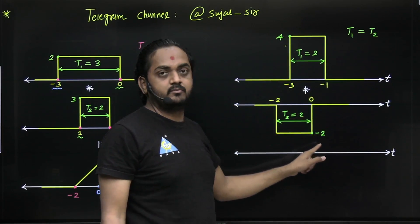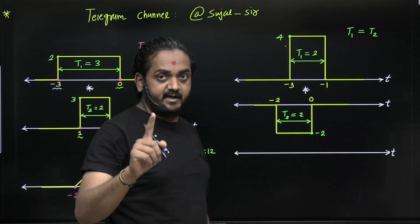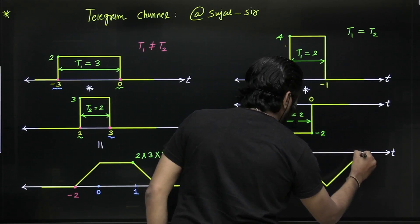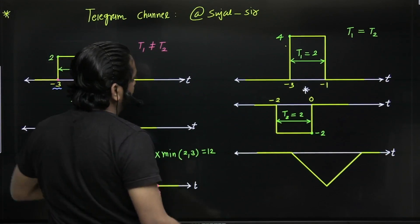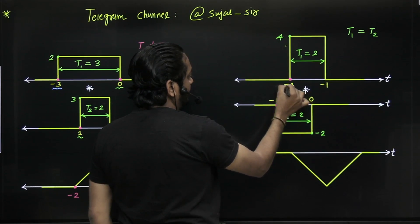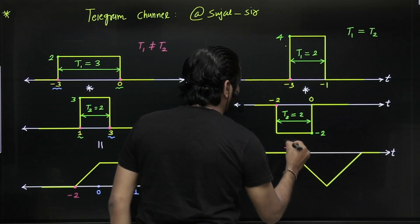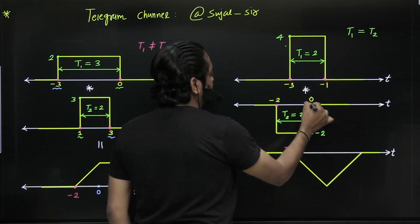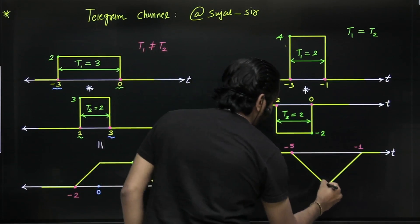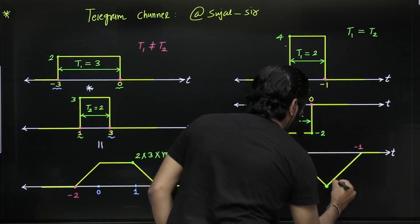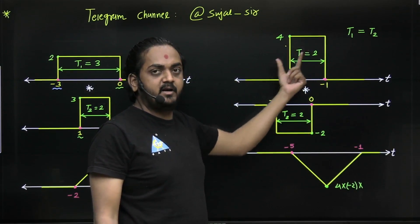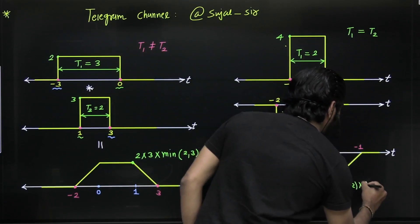Here the amplitude is positive 4 and here it is negative 2, so the multiplication gives 4 × (minus 2) = minus 8. This means the triangle has negative amplitude. The peak amplitude is amplitude one × amplitude two × minimum of t1 and t2. Since t1 = t2 = 2, we get 4 × (minus 2) × 2 = minus 16.